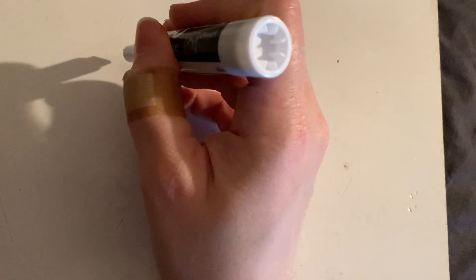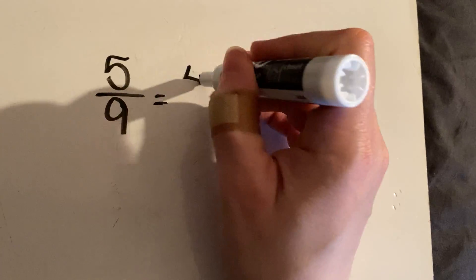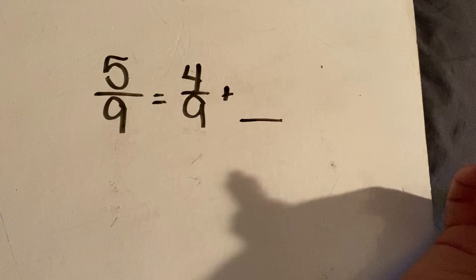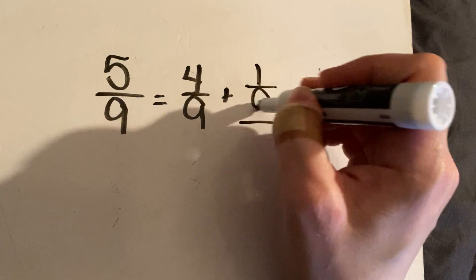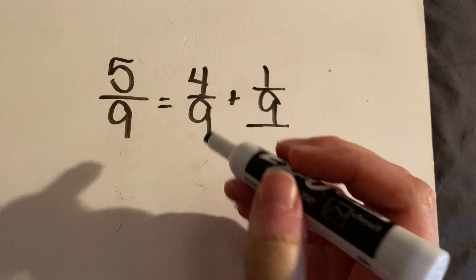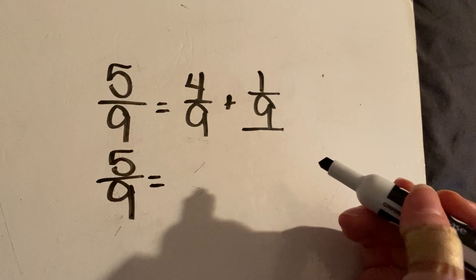Number two is pretty similar. It says something like five ninths equals four ninths plus what. Four plus what is five? Four plus one is five, denominator stays the same, so one ninth is your missing fraction.